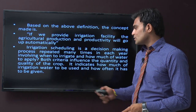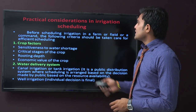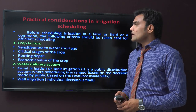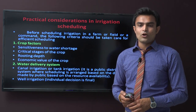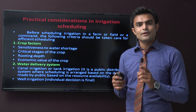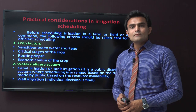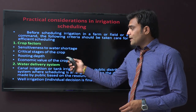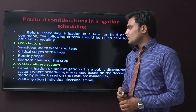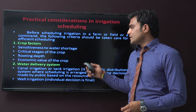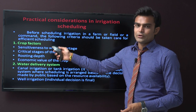Both criteria influence the quantity and quality of crops, indicating how much irrigation water to use and how often it has to be given. Practical considerations in irrigation scheduling: before scheduling irrigation on farms or in a command area, the following criteria should be taken care of. First is the crop factor, which includes four types: sensitiveness to water shortage, critical stage of the crop, rooting depth, and economic value of the crop.